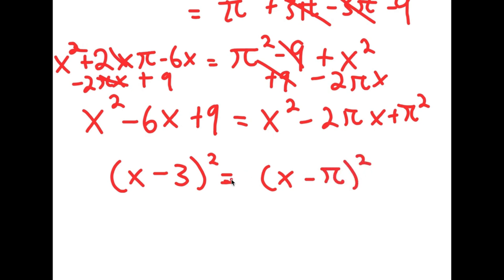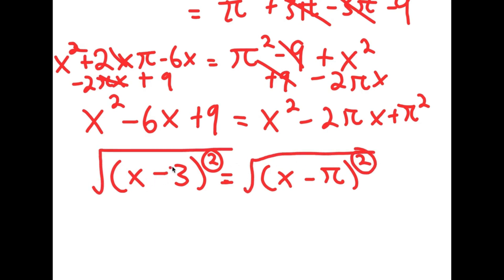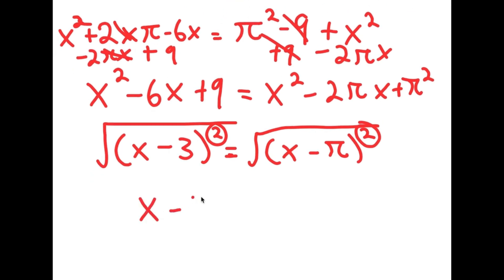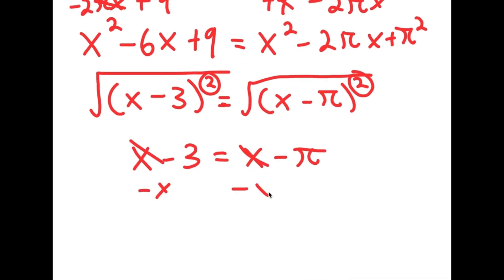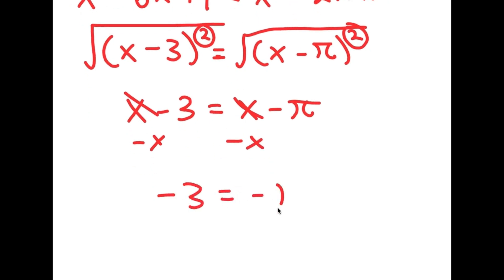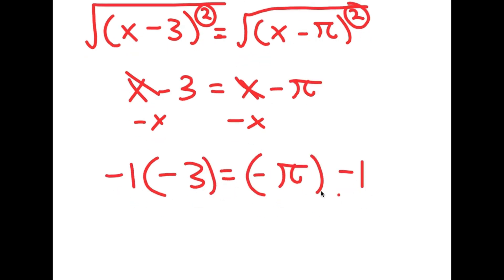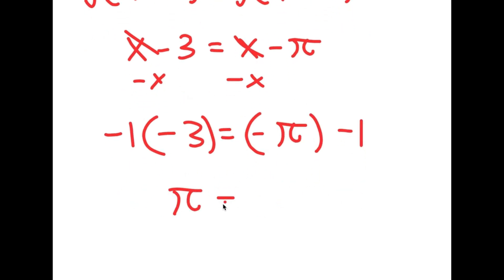So I have (x minus 3) squared is equal to (x minus pi) squared. I take the square root on both sides: the square root of (x minus 3) squared is x minus 3, and the square root of (x minus pi) squared is x minus pi. So I get x minus 3 is equal to x minus pi. Subtracting x from both sides gives negative 3 equals negative pi, and multiplying both sides by negative 1 gives pi equals 3.